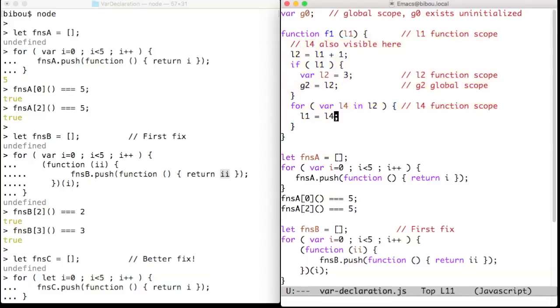The for loop introduces a var l4 variable, but the scope of l4 is not the body of the loop. It's, once again, the entire body of the function.